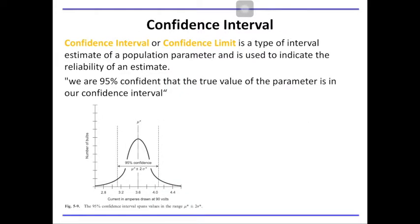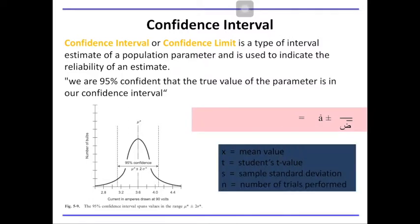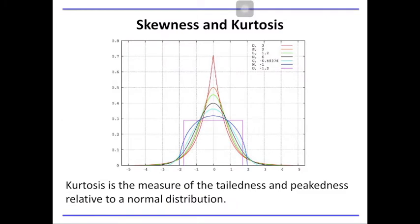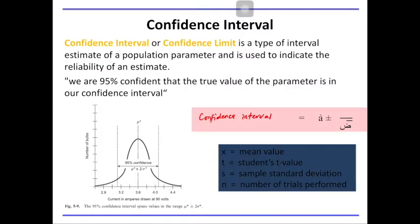We also have what we call confidence interval. Confidence interval is a type of interval estimate of a population parameter and is used to indicate the reliability of an estimate. For example, in research publications, results are often expressed in terms of the confidence of the experimenter — for instance, we are 95% confident that the true value of the parameter is in our confidence interval. The formula for the confidence interval is: mean plus or minus t times s over the square root of n, where t is the t-value from the t-table and s is the standard deviation.